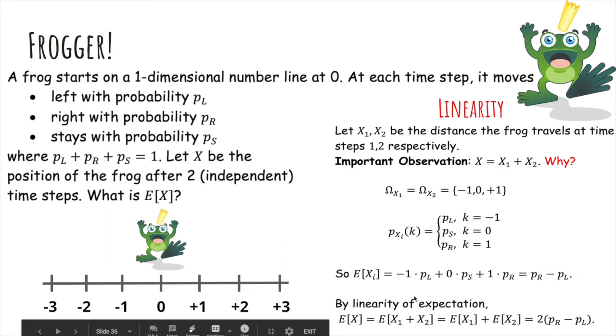And then by linearity of expectation, since x is defined to be x1 plus x2, this middle step here is where we split the expected value of the sum into the sum of the expected values. And you get 2 times PR minus PL.